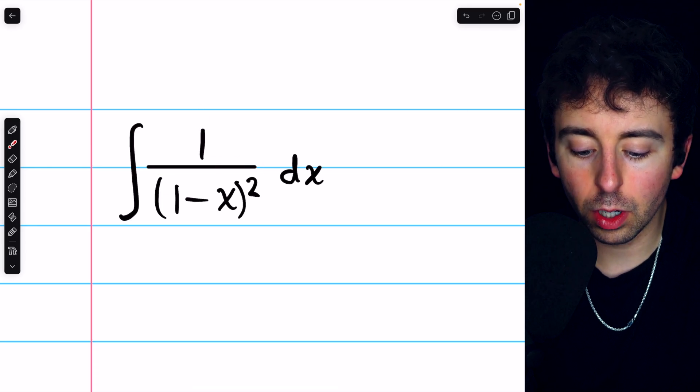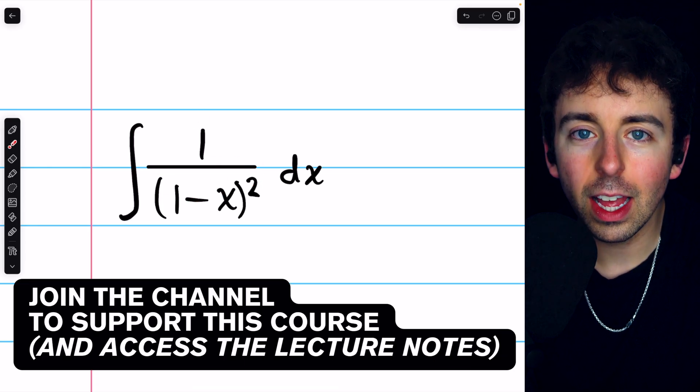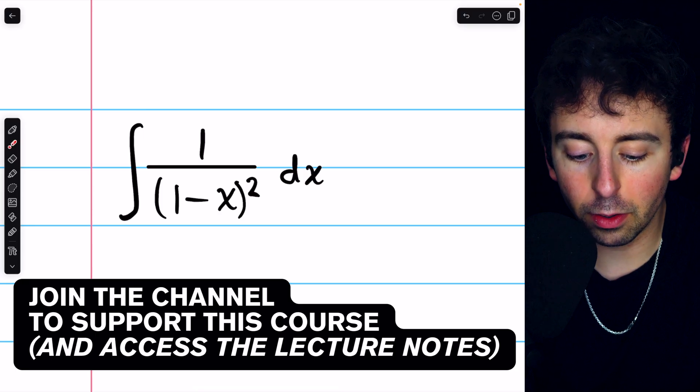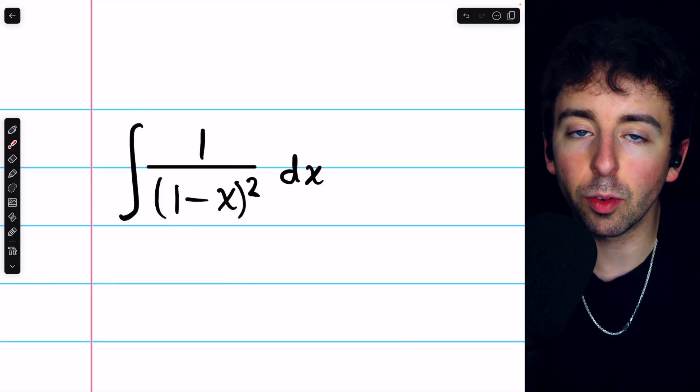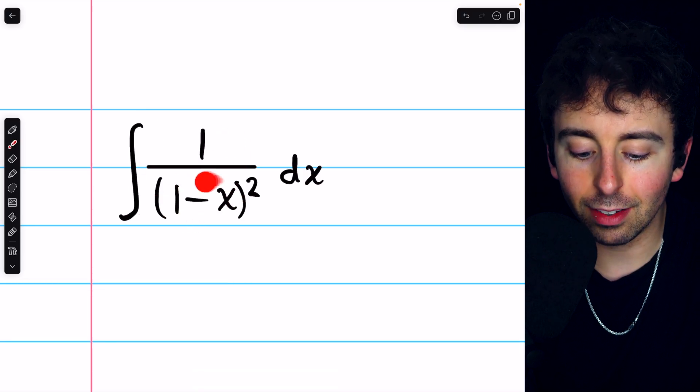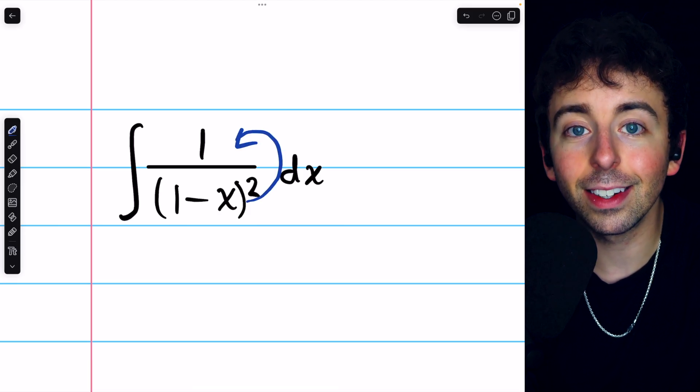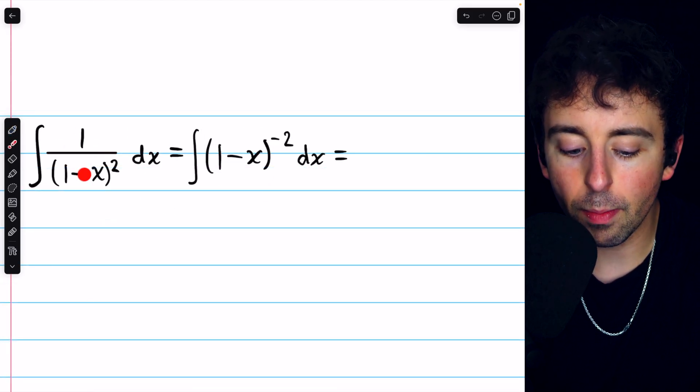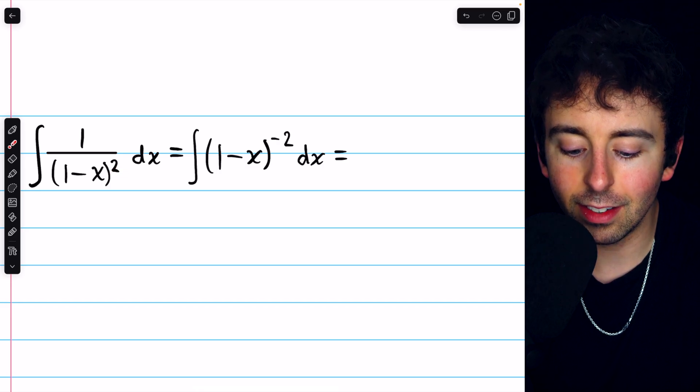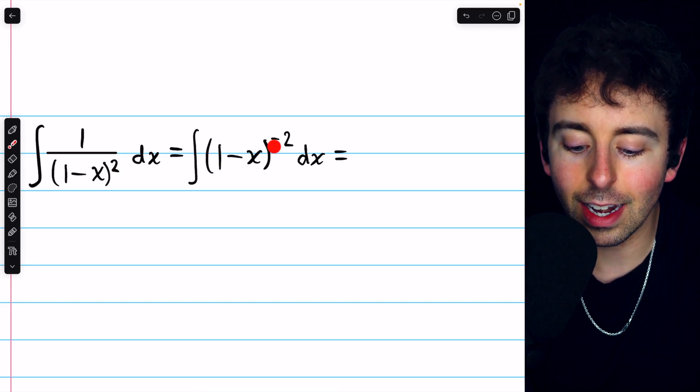To integrate 1 over 1 minus x squared, it may be easiest to first rewrite this without the fraction. So we'll bring this expression to the numerator by making the exponent negative. 1 over 1 minus x squared is the same as 1 minus x to the negative second.